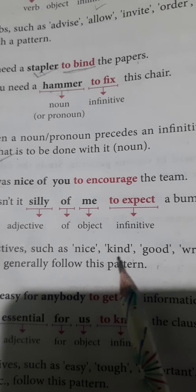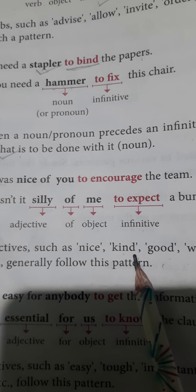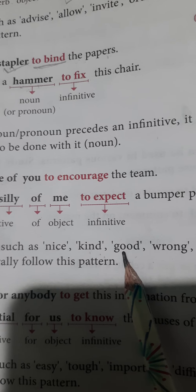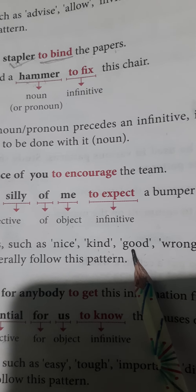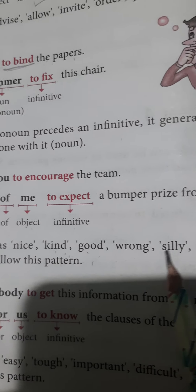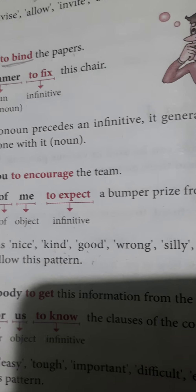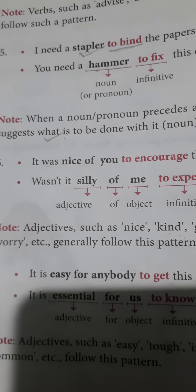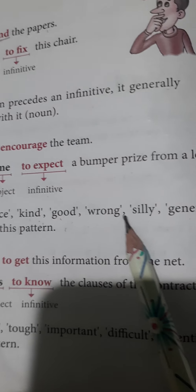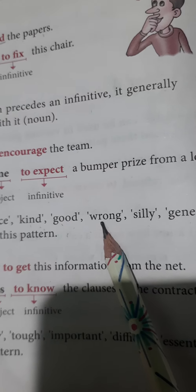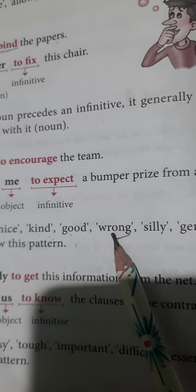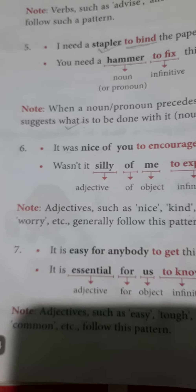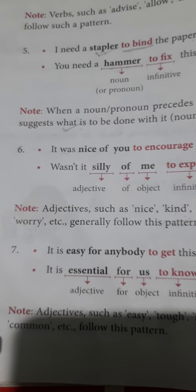'It's kind of you to look into the matter.' Or: 'It's good of you to help the needy.' 'I was worried about you.' 'It's wrong of me to speak like this.' We are making use of adjectives like kind, good, worried, and wrong in this pattern. You can frame sentences with the rest of the given verbs similarly.